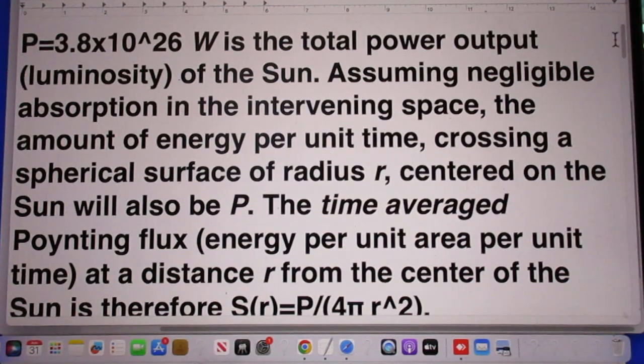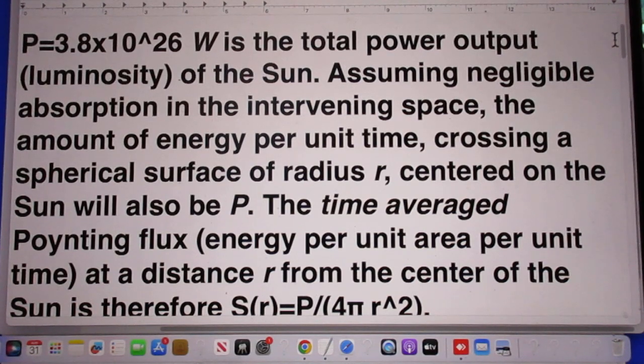P is 3.8 times 10 to the 26 watts. That is the total power output, we call that luminosity, of the sun. If we assume negligible absorption in the intervening space, the amount of energy per unit time crossing a spherical surface of radius R centered on the sun will also be P.